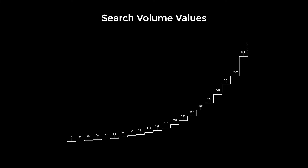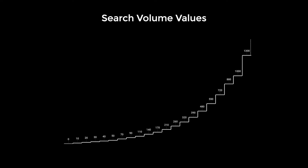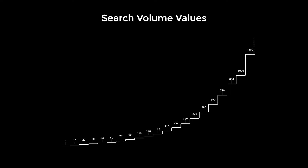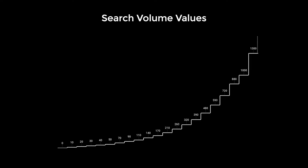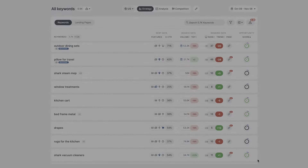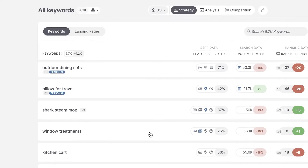You're seeing the same search volumes for multiple keywords because the values provided by Google Ads are estimated and presented as a non-linear scale. You can explore the search volumes in the app everywhere there are ranks.